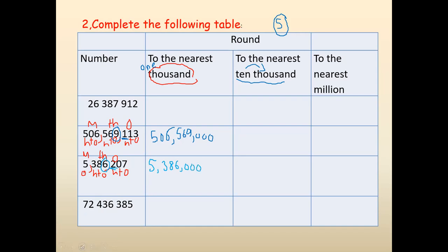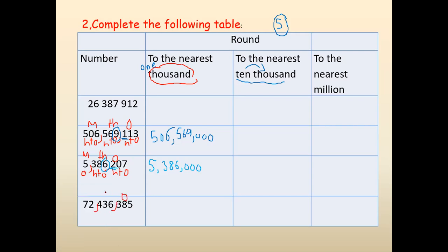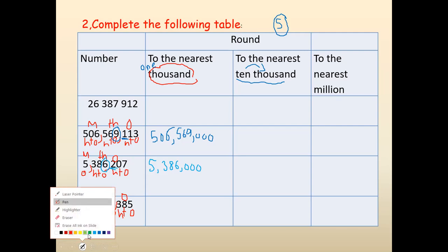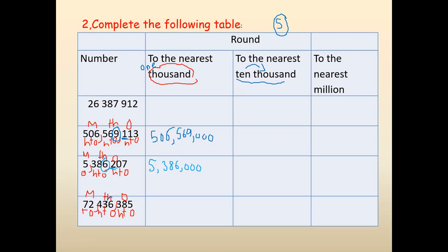The third one. Round to the nearest thousand. So I will name the families: ones, thousand, and million. Here we have just ones and tens. Ones digit in the thousand family — which digit? The thousand family is six. Then look at three. Is it less or more than five? It's less. So I will keep six the same — four, three, six — till six, then they will be zeros. We have finished this box of thousand.